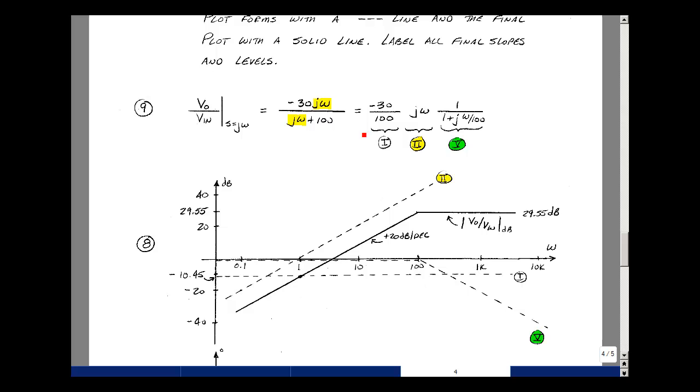The first term is a form 1, next one is a form 2, and then a form 5. Now if you take the magnitude of this, you're going to get a number less than 1. The minus sign will go with the angle. Take the magnitude in dB of a number less than 1 will be negative. This turns out to be minus 10.45, and I show that as a dotted line. And then jω passes through one radian per second. Form 5 has an ω_C of 100, so we'll go to 100 and then drop it 20 dB per decade.